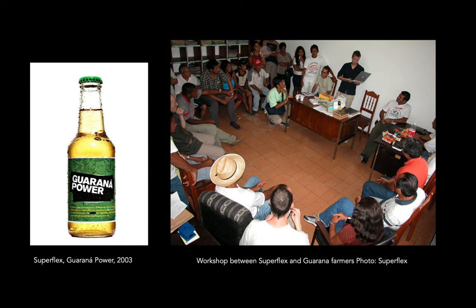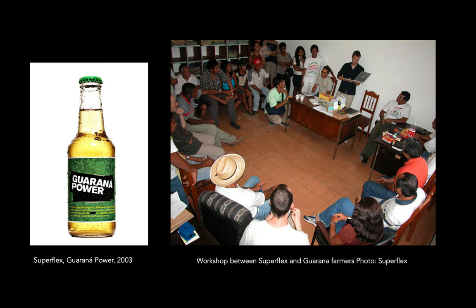You can also look at work by Superflex, a Danish collective of three artists who work together. They'll go to different places in the world and work with local communities. Here's a project called Guarana Power. You see documentation of them working with Guarana farmers, helping them organize and produce their own product — to have autonomy and control over their crop and their livelihoods — in the context of multinational corporations that buy up their Guarana, drive down prices, and harm these local communities.